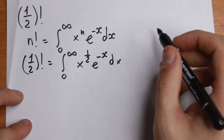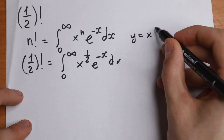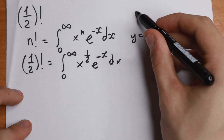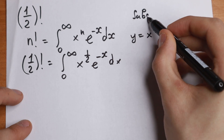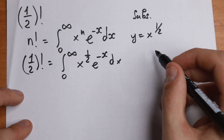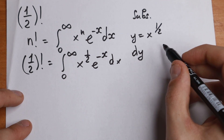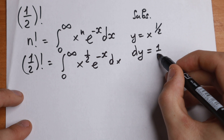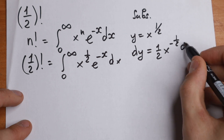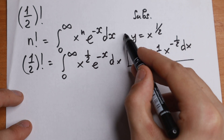Now let's apply a substitution: let y equal x to the power one-half. Then dy, the differential, equals one-half x to the power minus one-half dx. This will be our substitution.